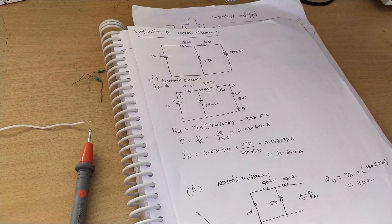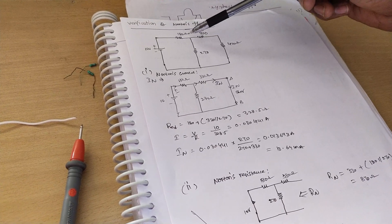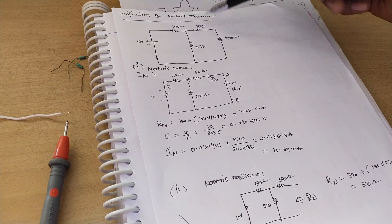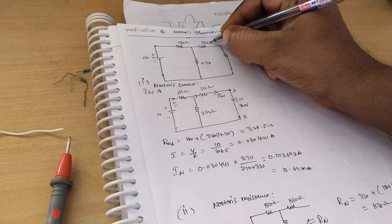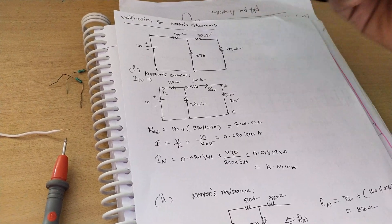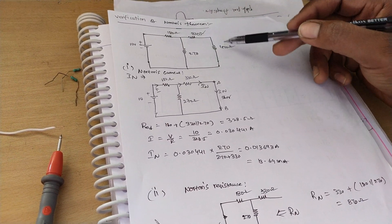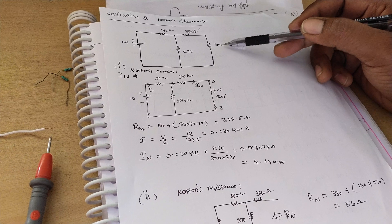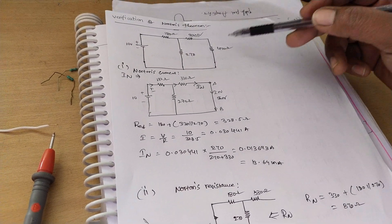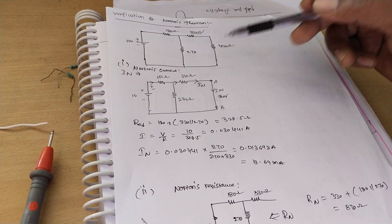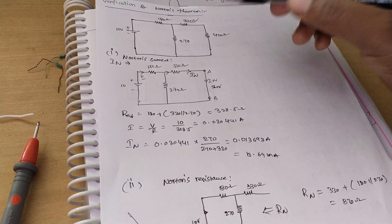Verification of Norton's theorem. Let us consider a circuit with 180 ohm, 330 ohm, 270 ohm, and 470 ohm — four resistances connected to 10 volts. What is the current through the 470 ohm resistance? How to calculate using Norton's theorem?